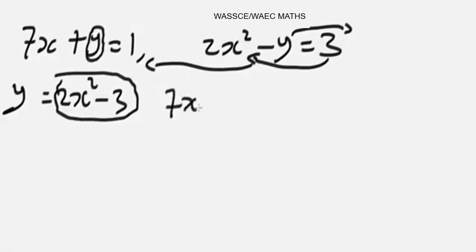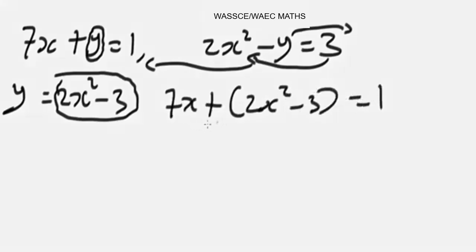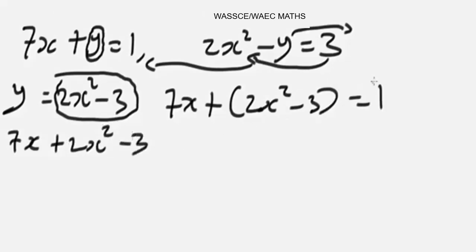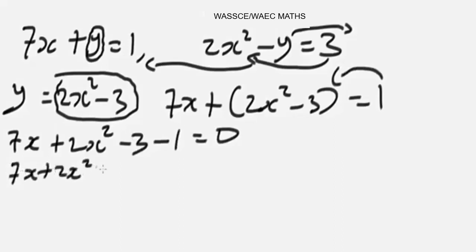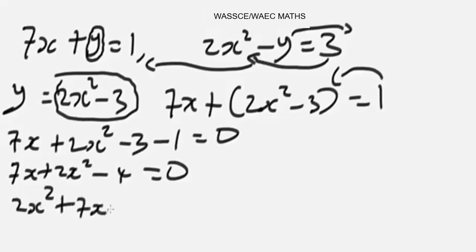Substituting, we have 7x + (2x² - 3) = 1. Breaking this down: 7x + 2x² - 3 - 1 = 0. The -3 and -1 combine to give -4. So our expression becomes 2x² + 7x - 4 = 0. We arrange with the leading term first: 2x² + 7x - 4 = 0.